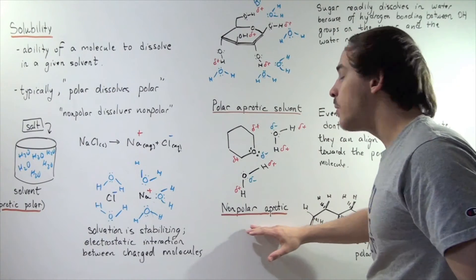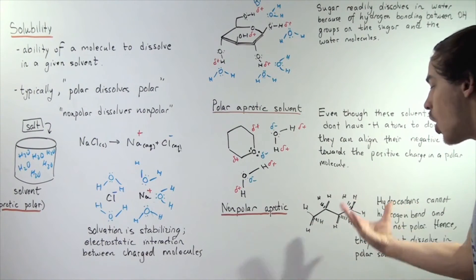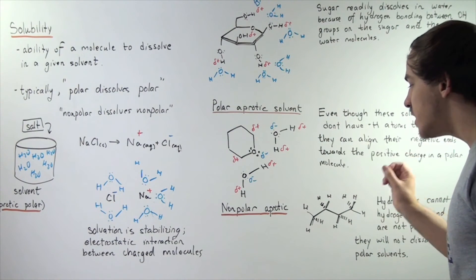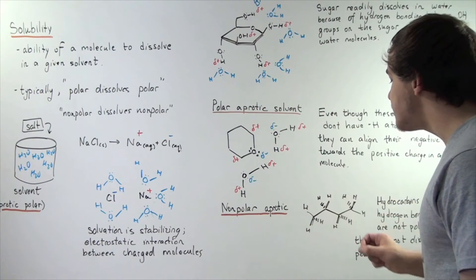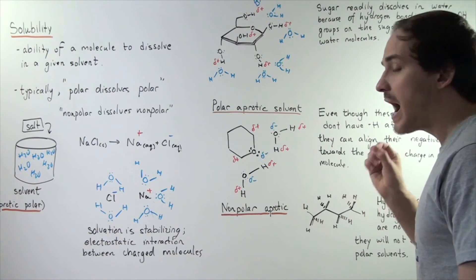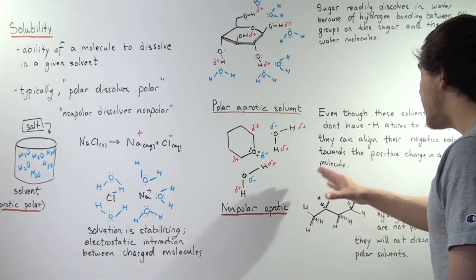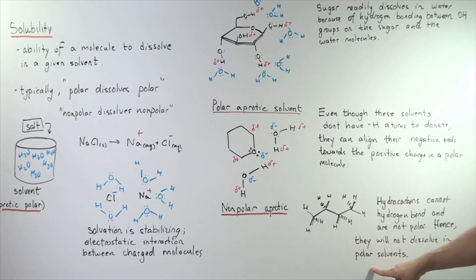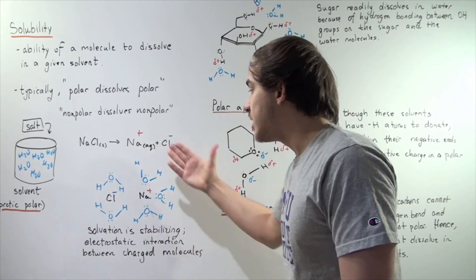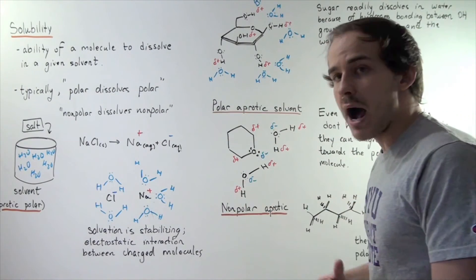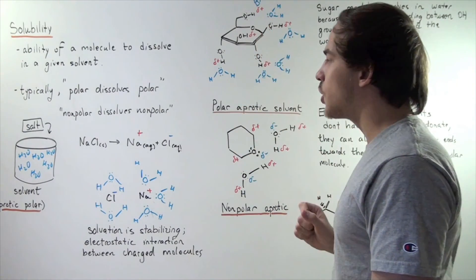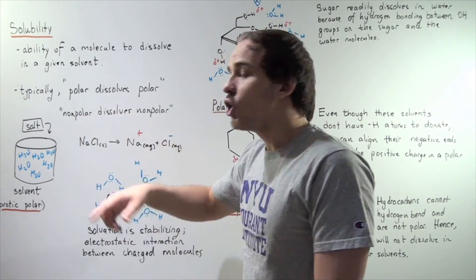What happens if we take a nonpolar aprotic molecule, like a hydrocarbon? A hydrocarbon has no net dipole moment — its dipole moment is zero, meaning it's nonpolar. It also doesn't have any H atoms to donate; all the H bonds are SP3 hybridized, making them relatively strong and nonpolar, so they will not dissociate the H atoms. Hydrocarbons cannot hydrogen bond and are not polar. Therefore, they will not dissolve in polar solvents, because solvation will not exist with hydrocarbons — there is no way our polar water molecule can interact with a hydrocarbon in a stabilizing fashion the way it did with ether, sugar, or salt. Nonpolar will not dissolve in polar.